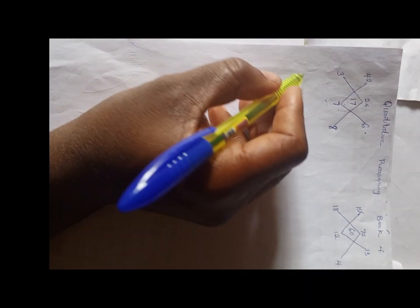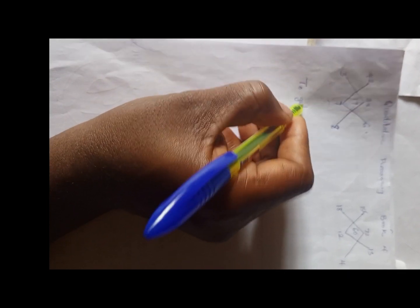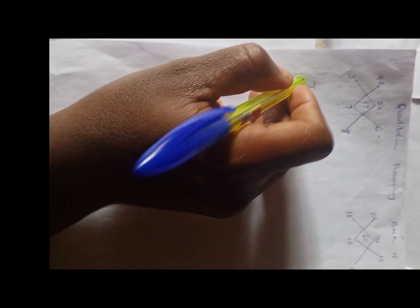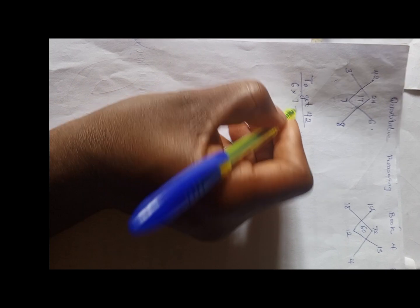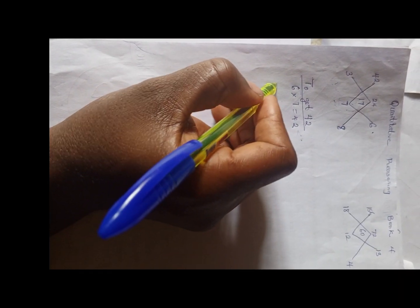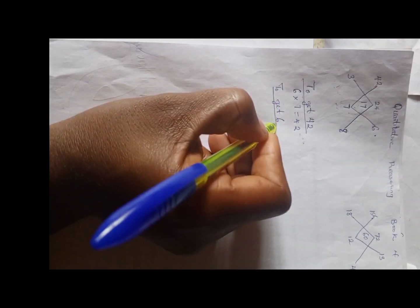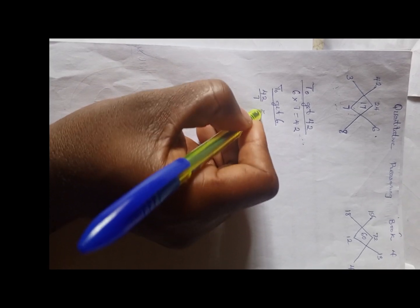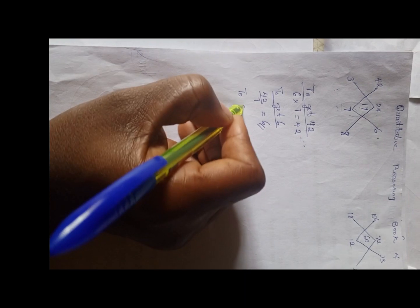To get 42, we start with that. We have 6 times 7 is 42, and to get 6, we have 42 divided by 7 and we have 6.